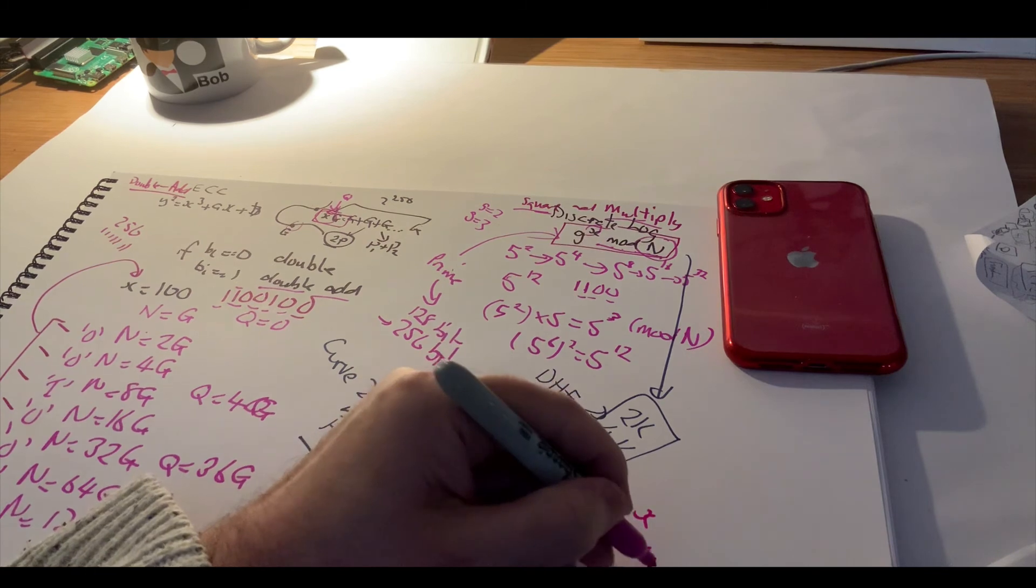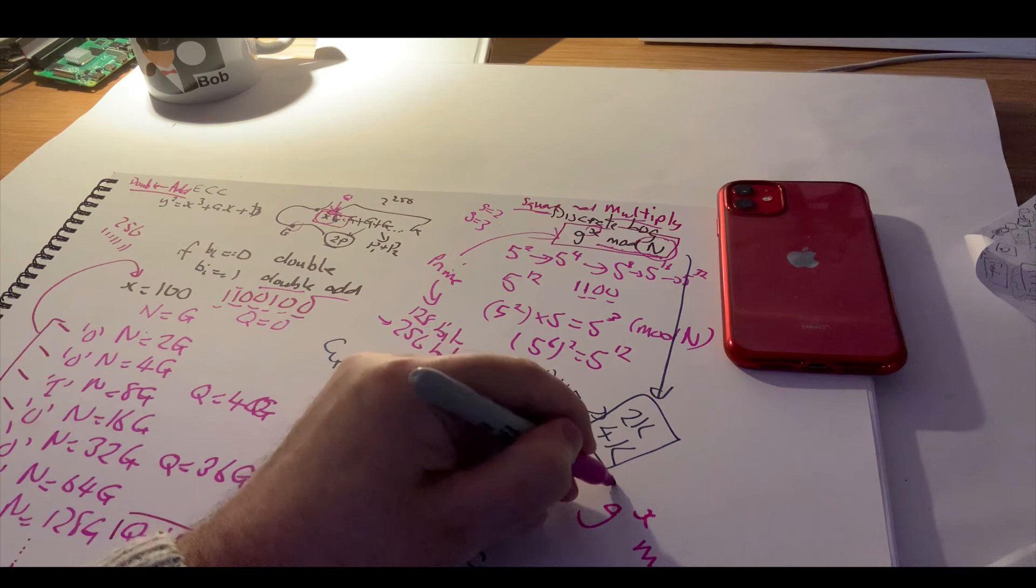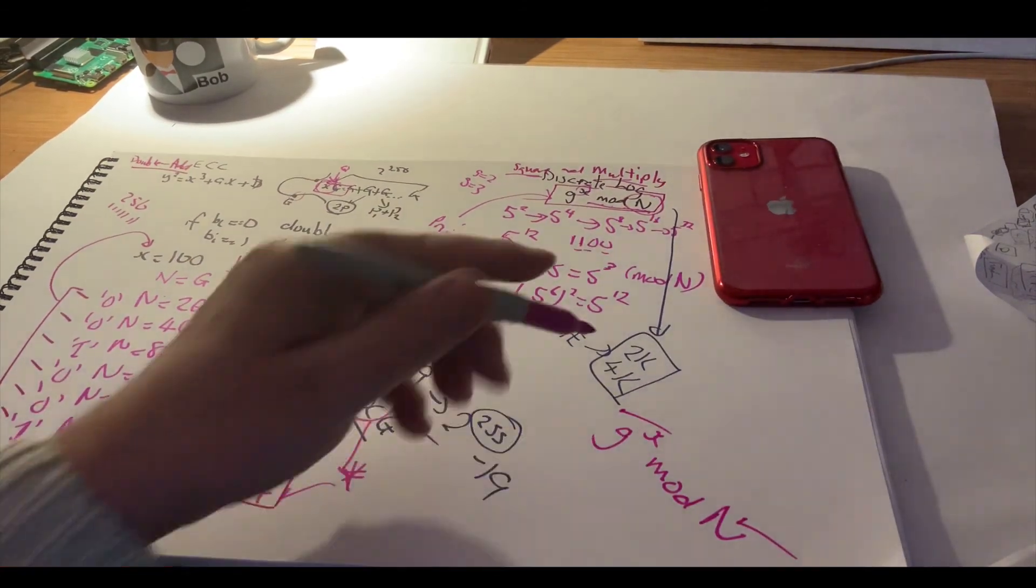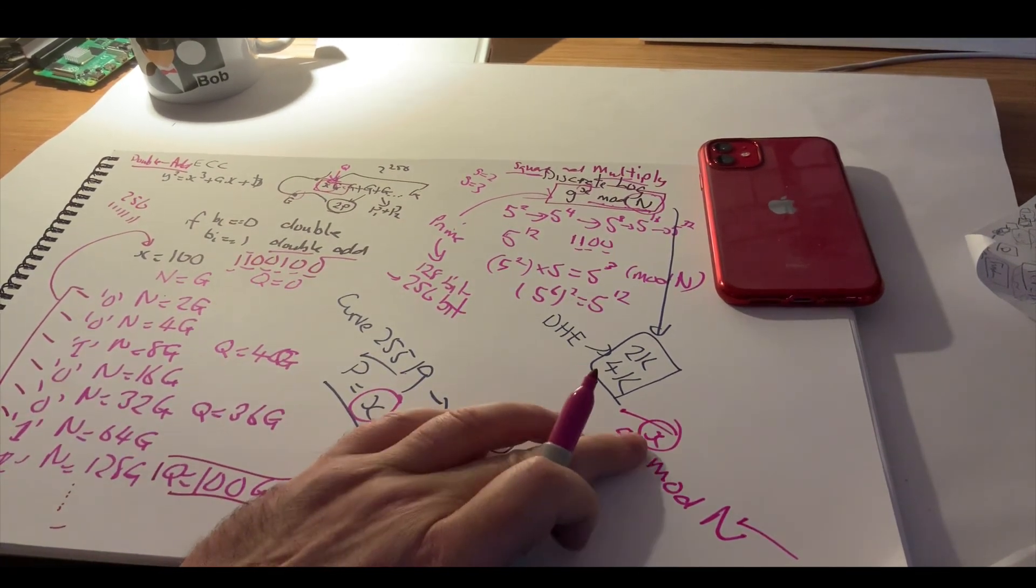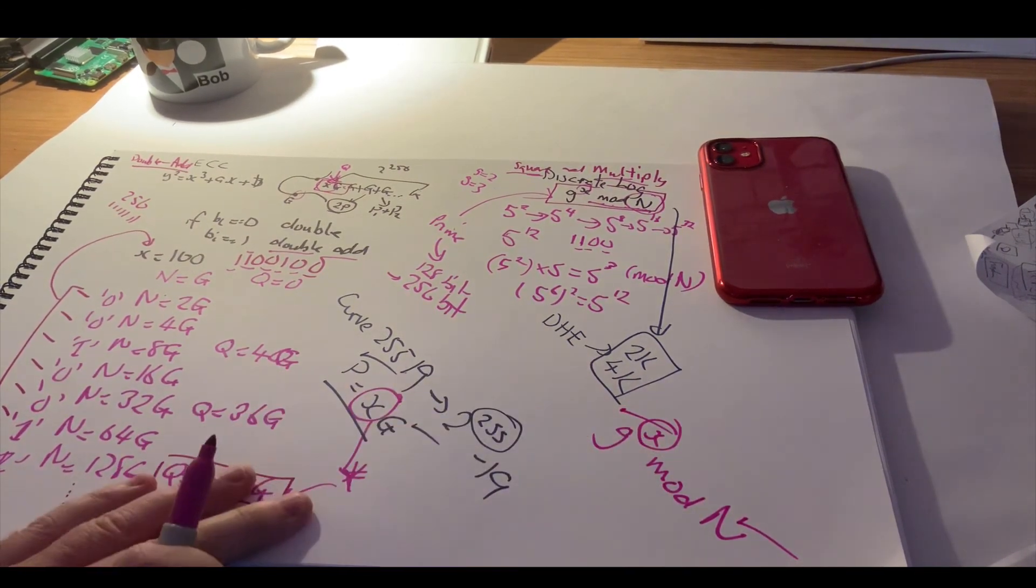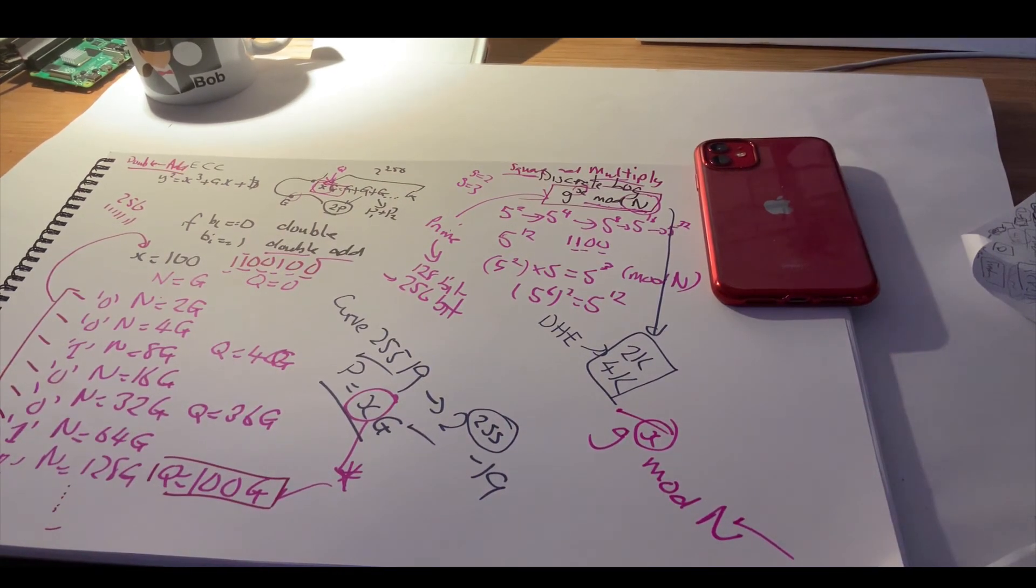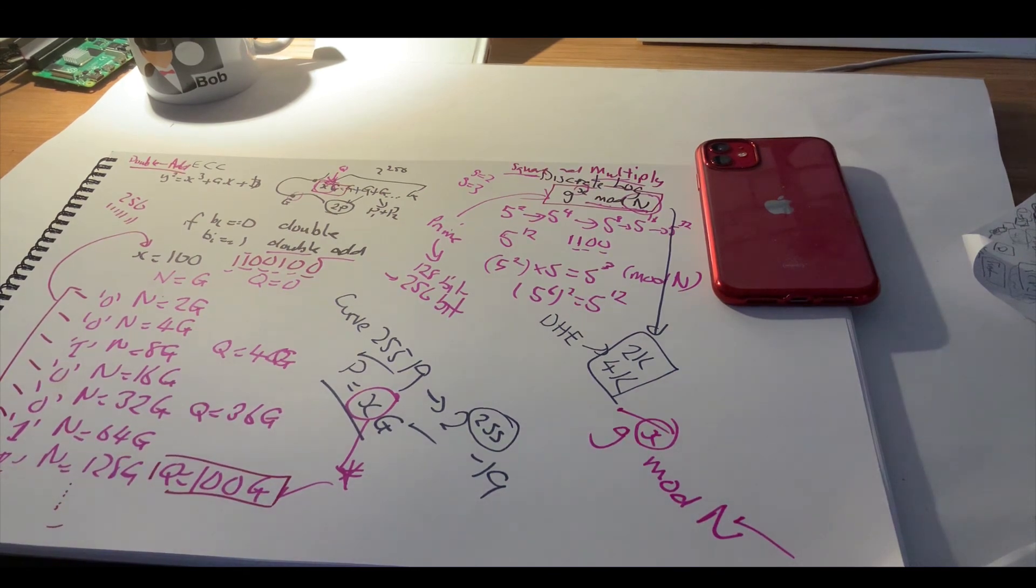Same with discrete logs. If we have g to the power of x mod n, then even though we know what the generator is and the prime number, then it is not possible with current computing to be able to work out what the value of x is. Okay, so this gives a quick overview on how to compute these large values.